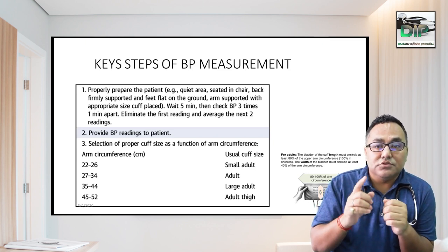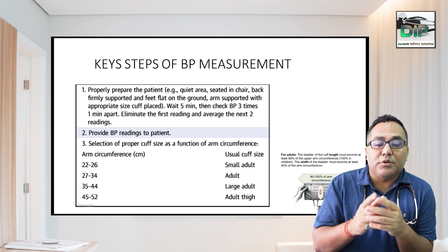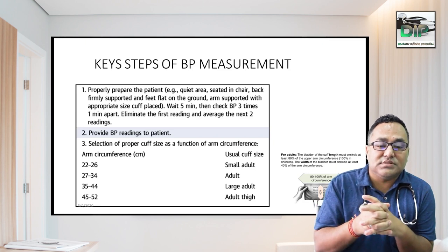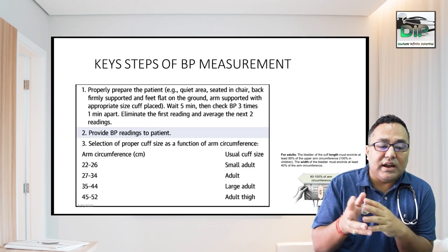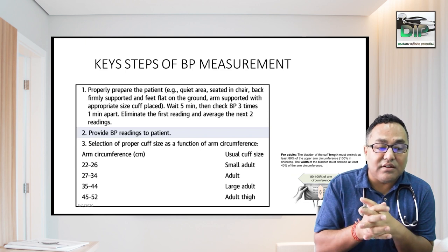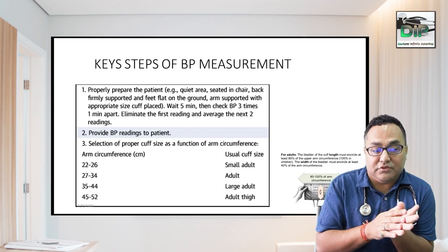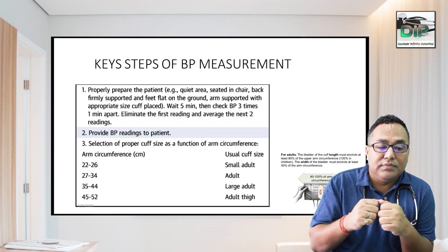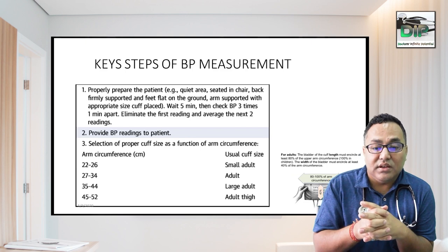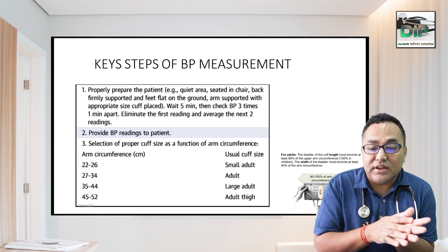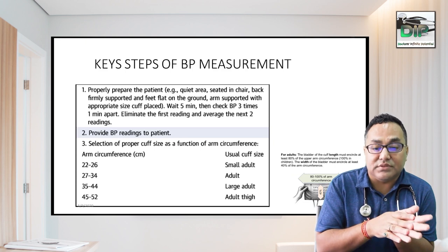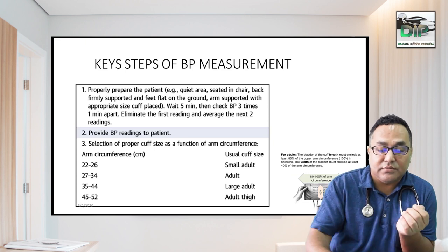Most importantly, use the appropriate cuff for the appropriate arm size: small adult is 20–26 cm arm circumference, adult is 27–34 cm, and large adult or obese is 35–44 cm. The bladder of the cuff length must encircle at least 80% of the upper arm circumference. This is very important.